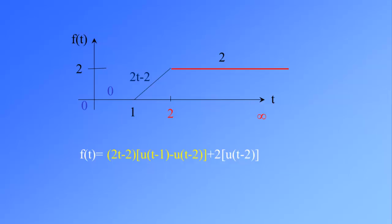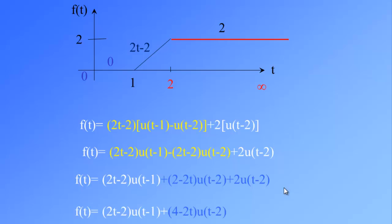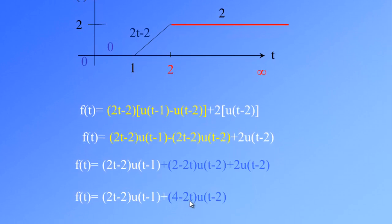Distributing (2t−2) in the first bracket, we get (2t−2)·u(t−1) − (2t−2)·u(t−2) + 2·u(t−2). Combining the second and third terms, this becomes f(t) = (2t−2)·u(t−1) + (−2t+2+2)·u(t−2), which simplifies to f(t) = (2t−2)·u(t−1) + 2·u(t−2). And this is how we express this piecewise function in terms of unit step functions.